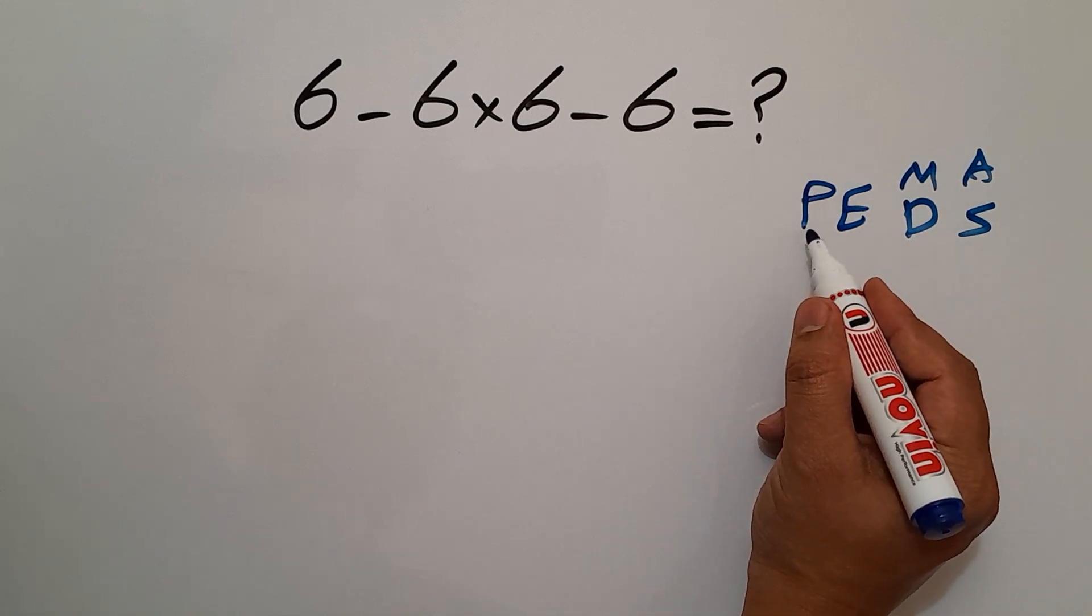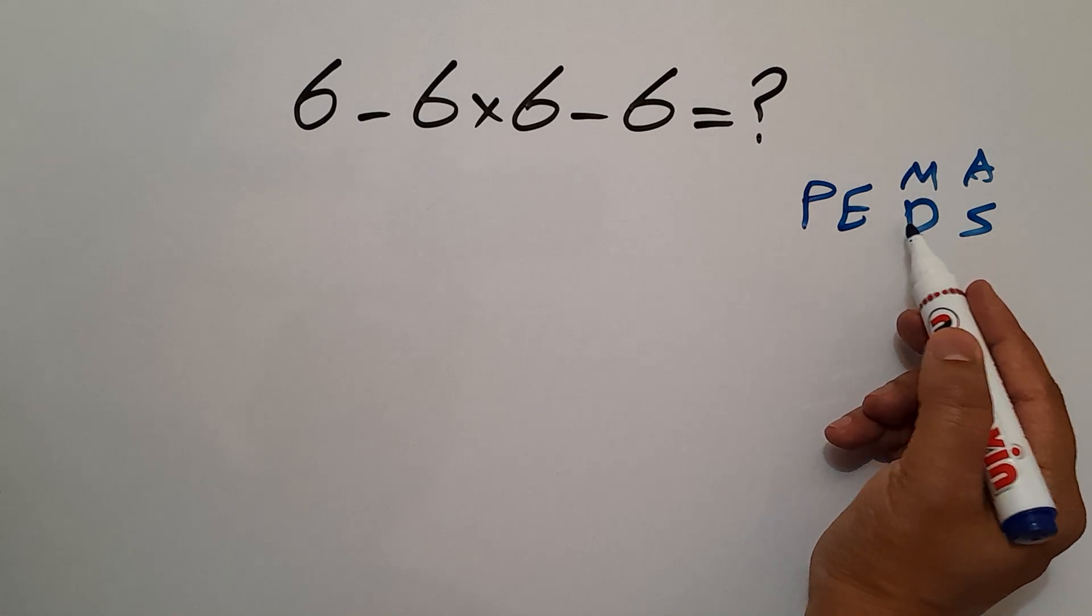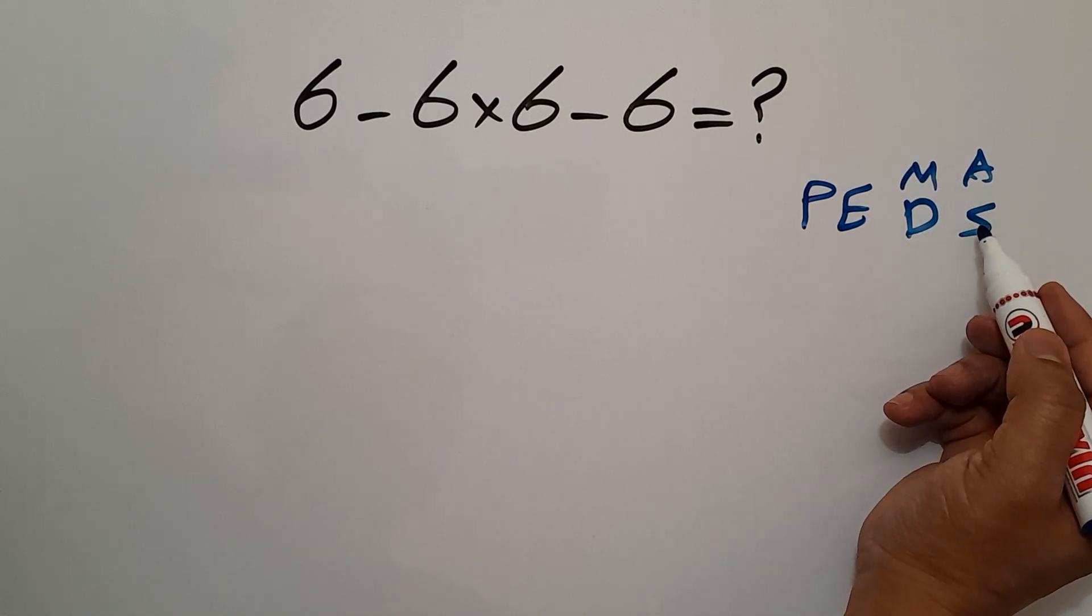P stands for parentheses, E stands for exponents, M and D stands for multiplication and division, and A and S stands for addition and subtraction.